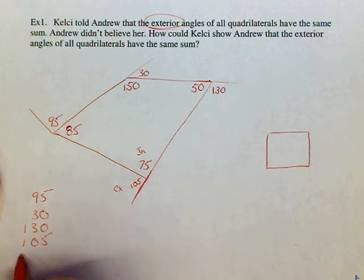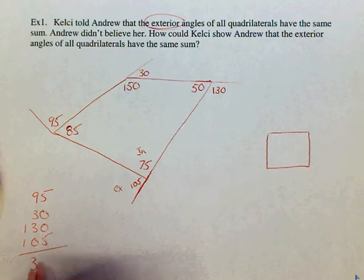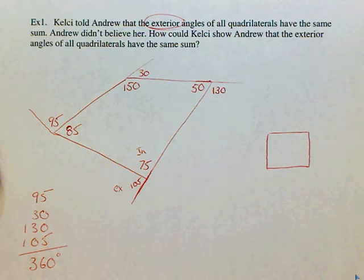So we are arguing here that the sum of the exterior angles. So 95 plus 30 plus 130 plus 105. We add these together and we get 360 degrees.